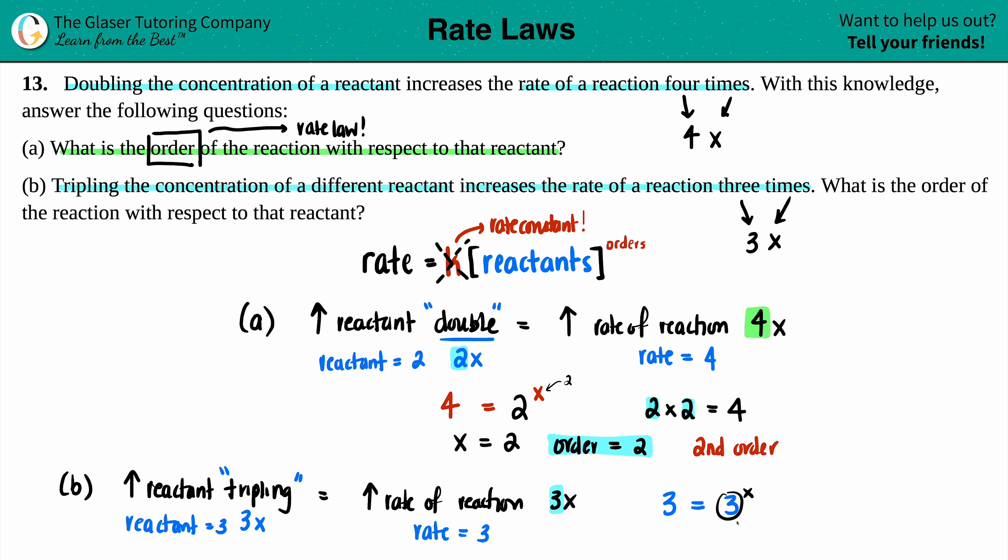So three to the what will get me three? How many threes do I need to get out a three? Yeah, just one. So my X value is a one. Three to the one equals three. X equals one. The order is one. And when the order is one, we call that first order.